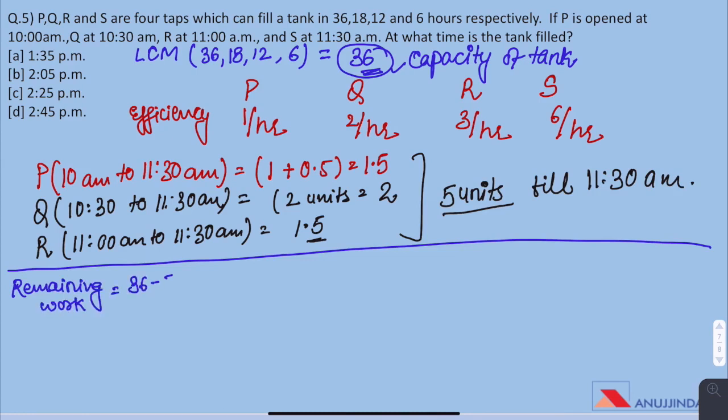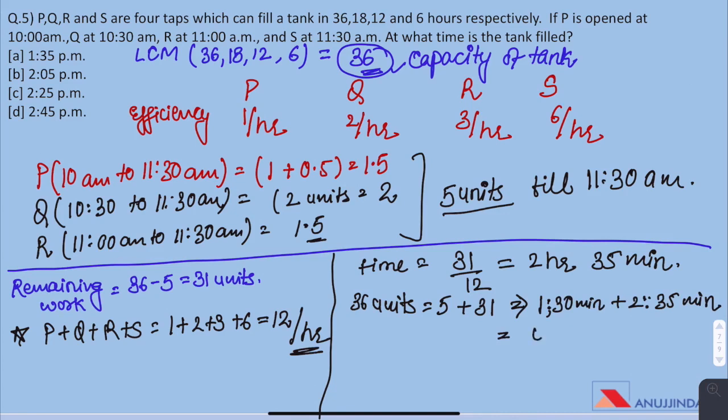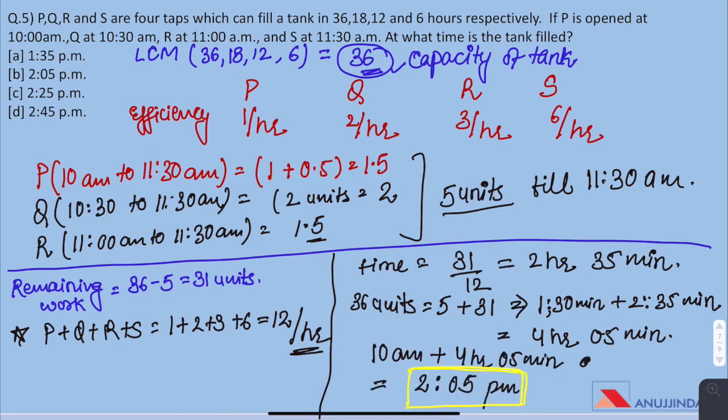The remaining work is 36 units minus 5 units which is 31 units. And we know that together P, Q, R and S they can do 12 units of work per hour. So, the time taken to complete the remaining work would be 31 by 12 which is 2 hours 35 minutes. Hence, the total time taken to do all the 36 units would be time taken to complete those 5 units plus the remaining 31 units which will be 1 hour 30 minutes plus 2 hours 35 minutes which is 4 hours and 5 minutes. And as the first tap was opened at 10 am, we can say that the tank will be filled to its complete capacity at 2 past 5 in the noon.